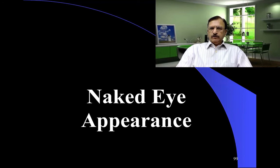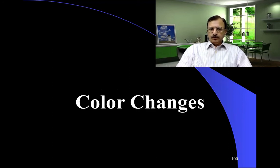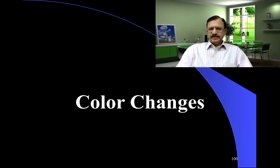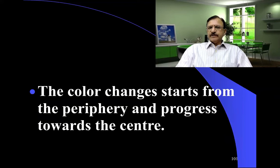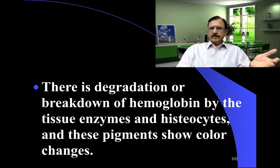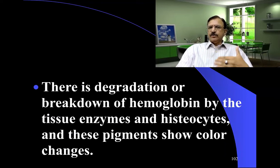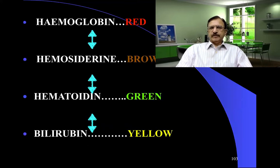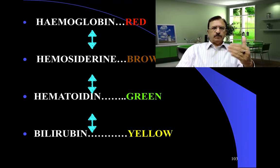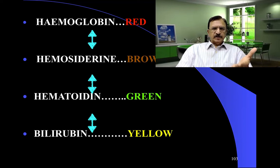Initially we look with the naked eye — the naked eye appearance of the bruise, that is from the color changes which the bruise is eliciting. The color changes start from the periphery and progress towards the center. There is degradation or breakdown of hemoglobin by tissue enzymes and histiocytes, and these pigments show the color changes: red initially from hemoglobin, then brown from hemosiderin formation, which turns green because of hematoidin, then yellow because of bilirubin.